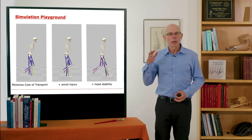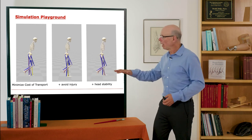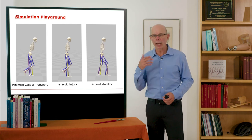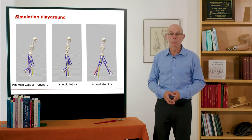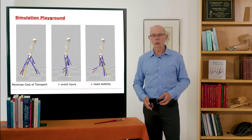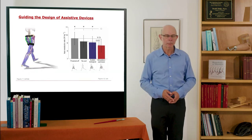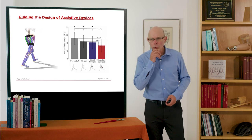Eye gaze and maintaining stable eye gaze is super important for most mammals, including bipedal humans. So if you add to the optimization criteria maintaining head stability and minimizing cost of transport and avoiding injury, you get a really beautiful-looking biological gait. So OpenSim gives you this simulation playground.